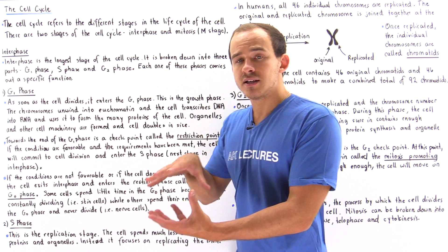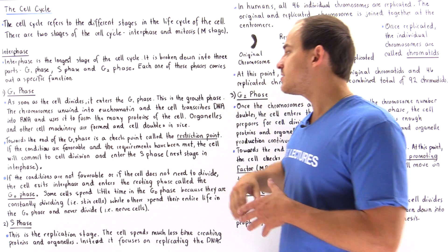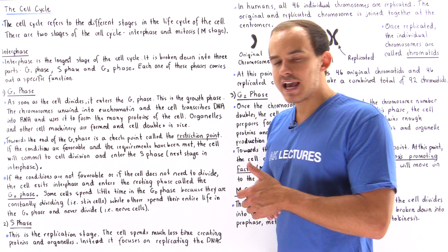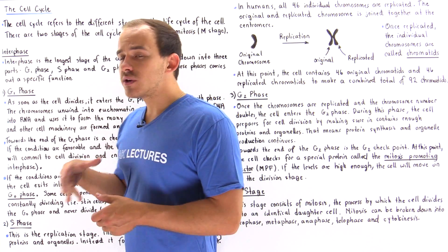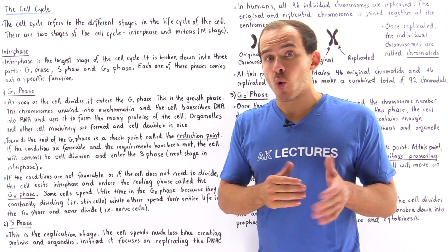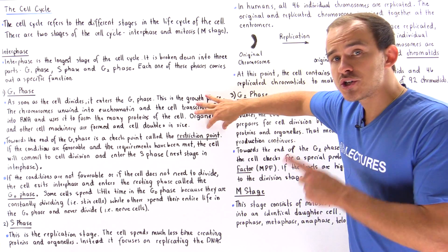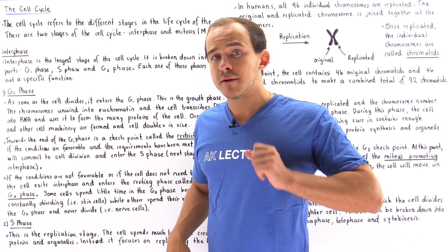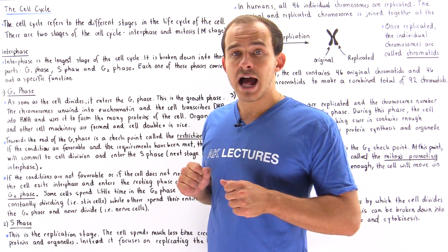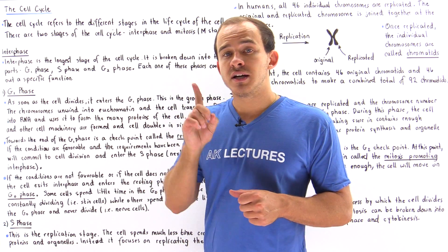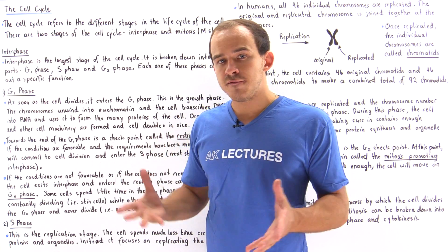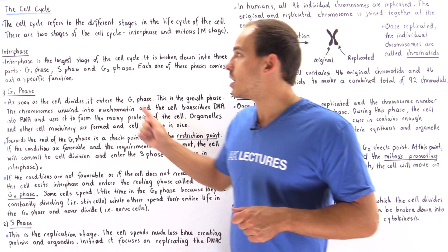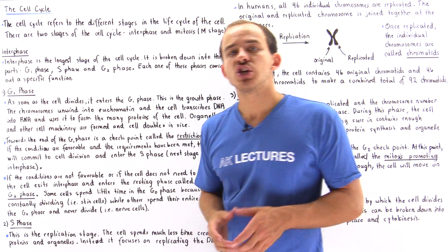As a result, the cell basically increases in size — in fact, the cell doubles in size during the G1 phase. Now towards the end of the G1 phase is a checkpoint known as the restriction point. If the conditions are favorable and the requirements have been met by the cell, the cell can commit itself to the process of cell division by exiting the G1 phase and entering the next phase of interphase known as the S phase.